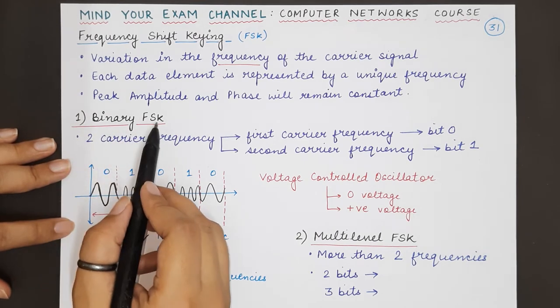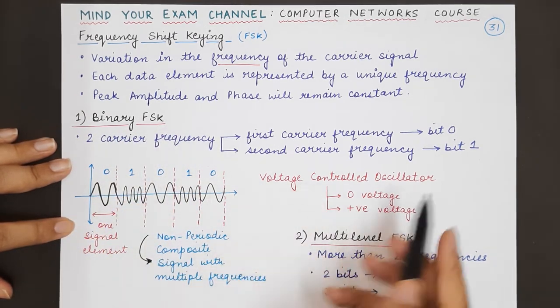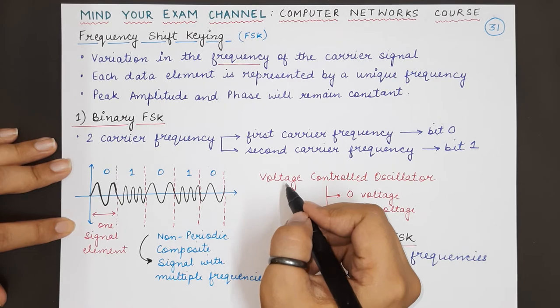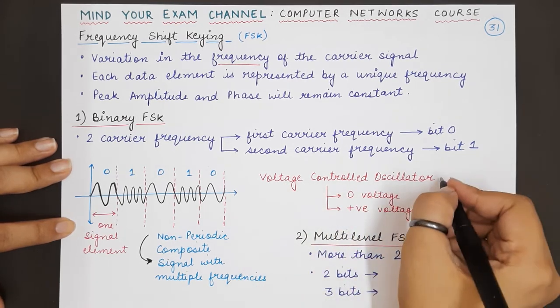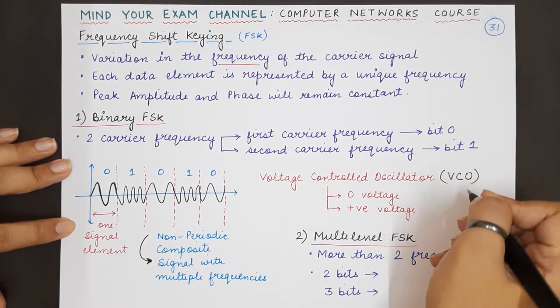Generally, binary frequency shift keying is implemented using a voltage controlled oscillator, also known as VCO.